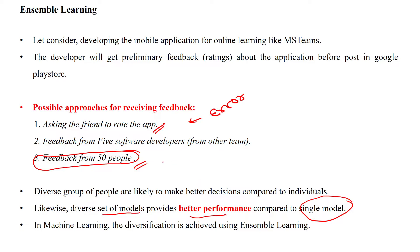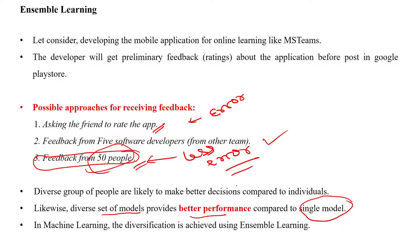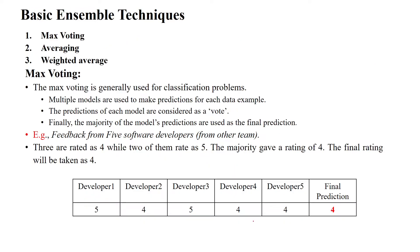But when using a combination of people — a group of people combined together — there is the possibility of less error and you get good performance. Similarly in machine learning, we achieve that same kind of error reduction by combining different models. Diversification of different models combined together gives better performance.